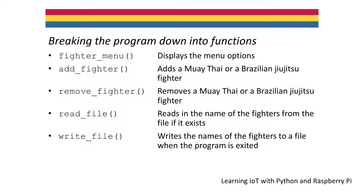Let's break this program down into functions: a function that displays the options, a function for adding a fighter, a function for removing a fighter, a function that reads in the names of the fighters from a file if the file exists, and a function that writes the names of the fighters to a file upon exiting from the program.